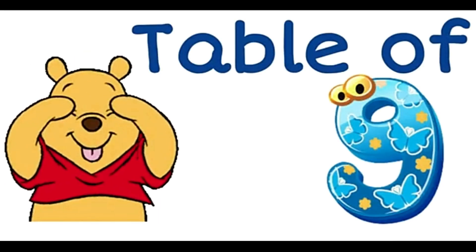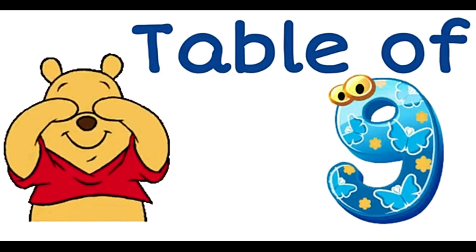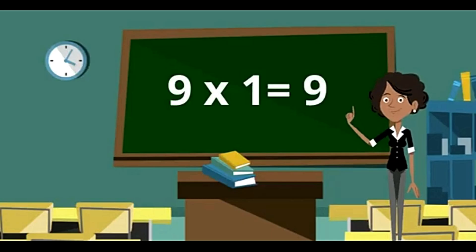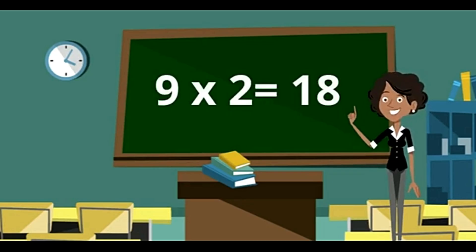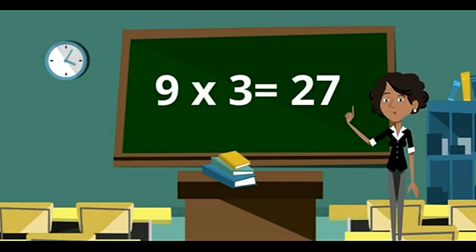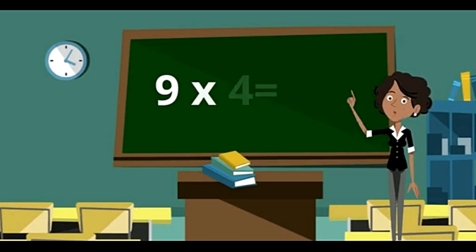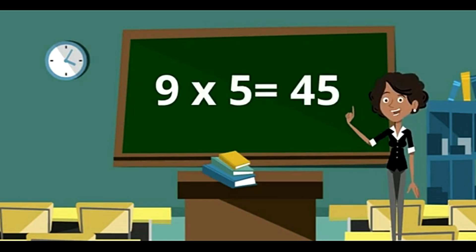Now we'll be learning table of 9. 9 ones are 9. 9 threes are 27. 9 fours are 36. 9 fives are 45.